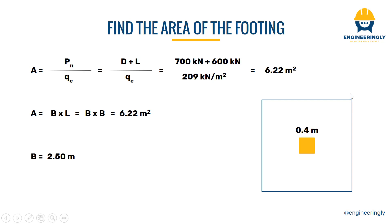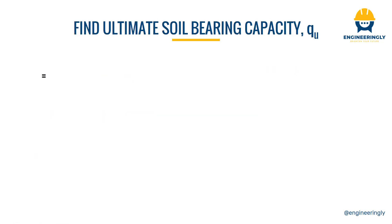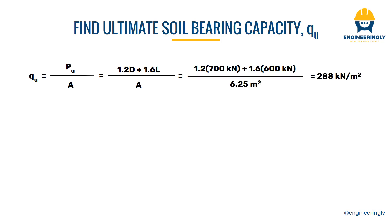With the footing area determined, we next obtain the ultimate soil bearing capacity, Qu. This is the factored load divided by the footing area. The factored load is 1.2 times the dead load plus 1.6 times the live load, divided by 6.22 m². The ultimate bearing capacity is calculated to be 288 kilonewtons per meter squared.